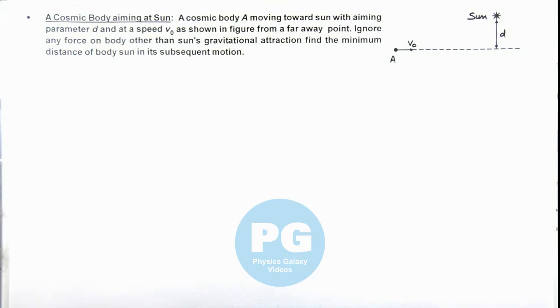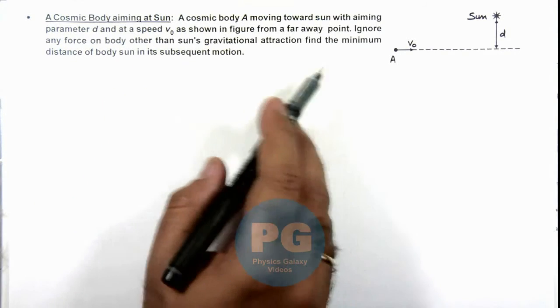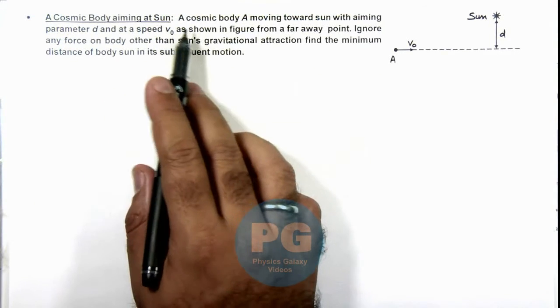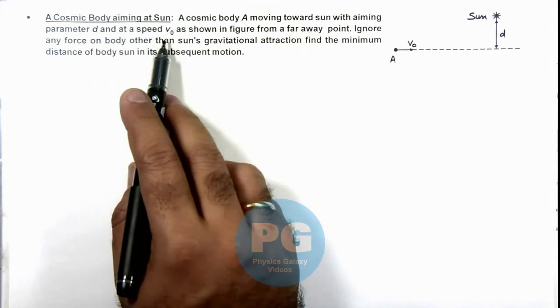In this illustration we'll discuss a cosmic body aiming at sun. Here we can see in the figure it shows that a cosmic body A moving towards sun with aiming parameter d and speed v not.